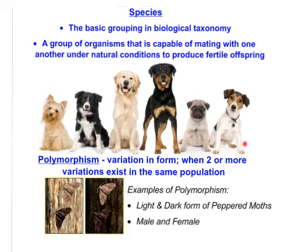So these individuals, these organisms, are able to do just that — mate with one another under natural conditions to produce fertile and viable offspring. Natural conditions is an important condition, in that we're not talking about captivity. When certain organisms are separated for different reasons, they are not able to produce under natural conditions, and being in captivity or some other imposed way of breeding with one another does not constitute the definition of species.